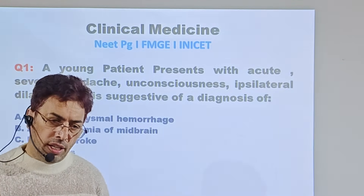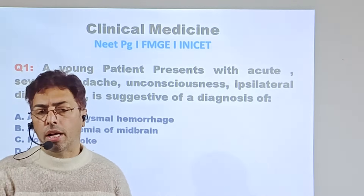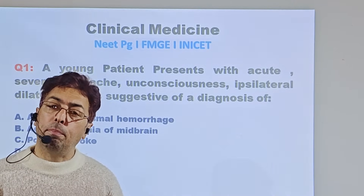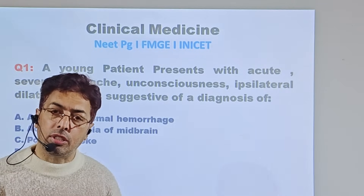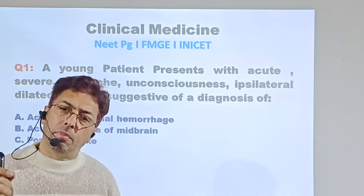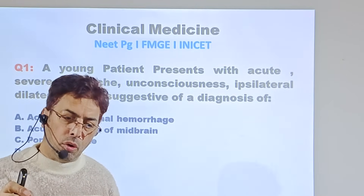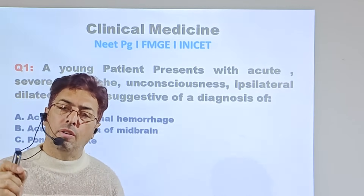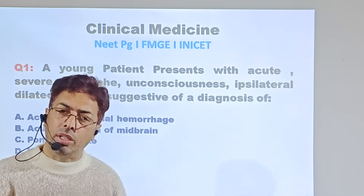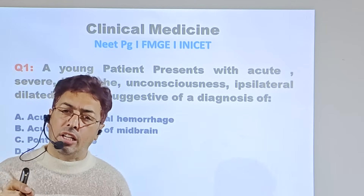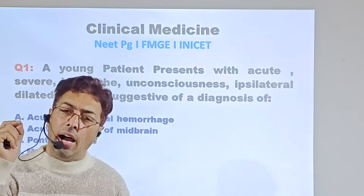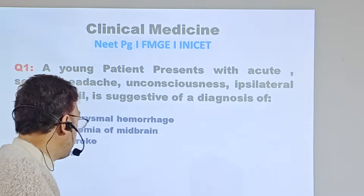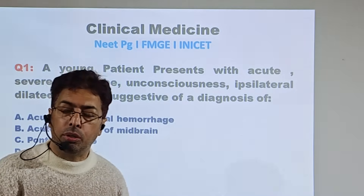Pontine stroke — the pons is a very important area. Pontine strokes present with something else entirely: hyperpyrexia and classic pinpoint pupils. The patient can present with headache and unconsciousness, but there would be the locked-in syndrome, which is the classic pontine syndrome. Pontine vessels would be obstructed or there would be hemorrhage within the pontine vessels. The characteristics of pontine stroke are unconsciousness, locked-in syndrome, hyperpyrexia, and pinpoint pupils — not dilated pupils. So pontine hemorrhage is ruled out.